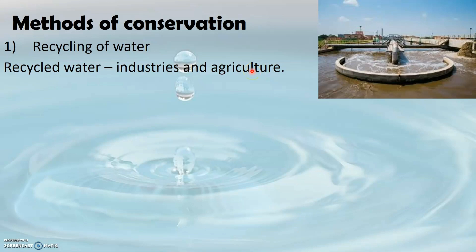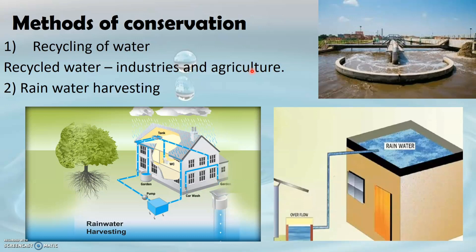Rainwater harvesting is another way to conserve water. By this method, rainwater can be utilized rather than allowing it to get wasted. As you see in the picture, rainwater can be collected in tanks, or if it is a low-lying area, rainwater can be collected in pits. This collected rainwater can then be used for various purposes, like watering the garden, car washing, and so on.